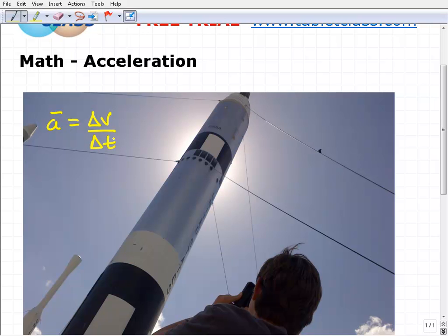I'm kind of curious: has anybody seen this formula? Have you recognized this formula? Some of you I'm sure know what this means. What this means is acceleration, or average acceleration, is equal to—